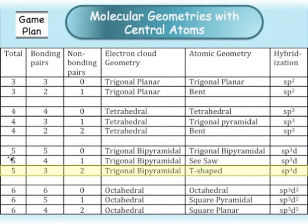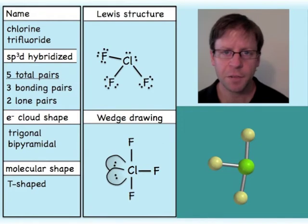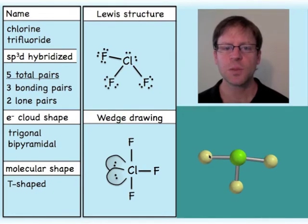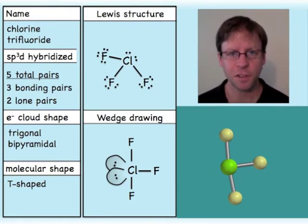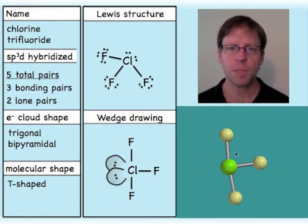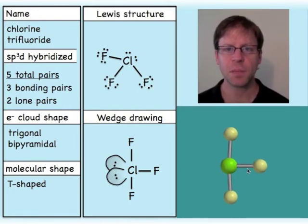The next shape still has five total pairs but now two of them are lone pairs. The example is ClF3, and we call this T-shaped — you can see why. The top and bottom positions are occupied by fluorines. Lone pairs prefer the equatorial positions on that central ring, so we have one lone pair in the plane and one behind, slightly out of the plane of the page.